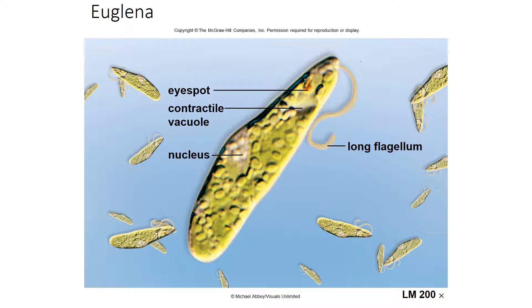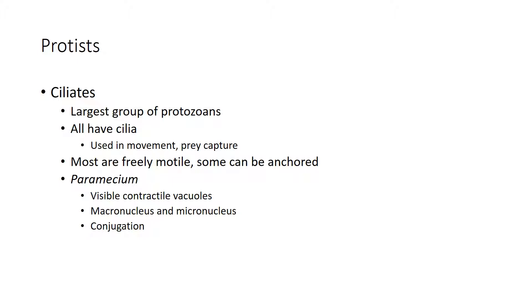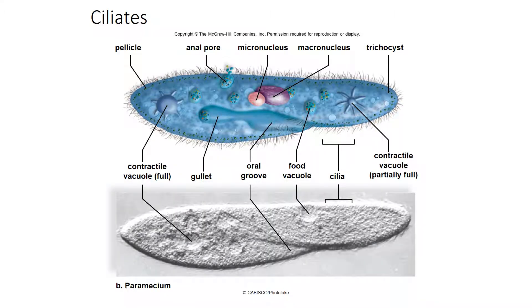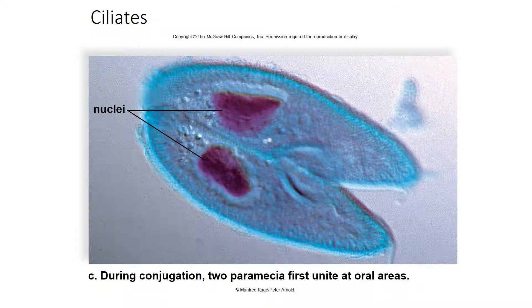Ciliates are the largest group of protozoans, and they all have cilia — little hairs that help them move and find food. Most move around freely; some are anchored on rocks or the ocean floor. Paramecia are found in pond water, and if you cut them in half, they will regenerate. They have very visible vacuoles and nuclei. Here's a stentor, which is an anchored ciliate, and here's a paramecium under a microscope. The cilia are these little hairs, and here's another picture of them conjugating or splitting in two.